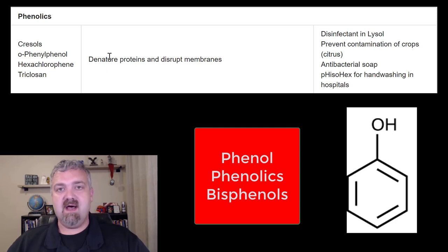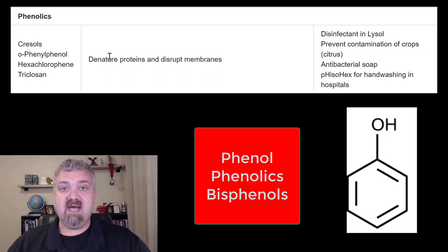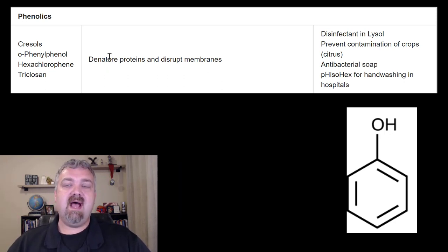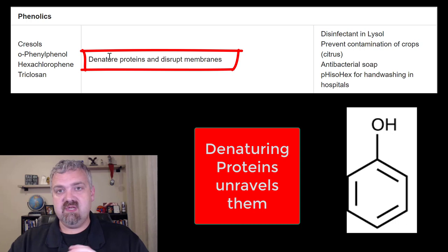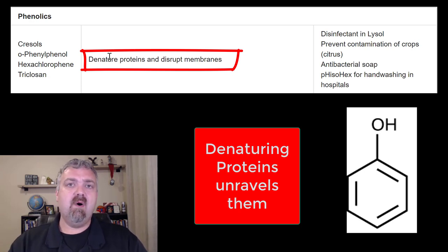We're going to start with the group called the phenolics, and we'll break them down into phenol, then the phenolics specifically, and then the bisphenols. We'll save triclosan for a separate video. The function of these — how they kill microbes — is they denature proteins and they disrupt membranes. Denaturation is when you unravel the three-dimensional shape and structure of proteins so they no longer have their function. Disrupting membranes can rip holes in membranes and even cause them to congeal.